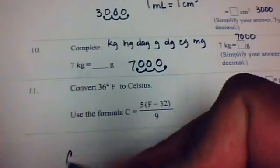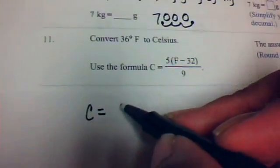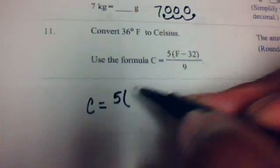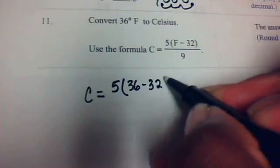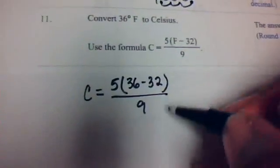In this case here, we're finding the Celsius temperature converting 36 degrees, so it'll be 5 times the Fahrenheit temperature, which is 36, so it'll be 36 minus 32, divided by 9.